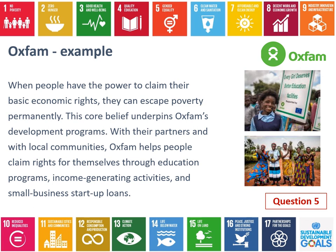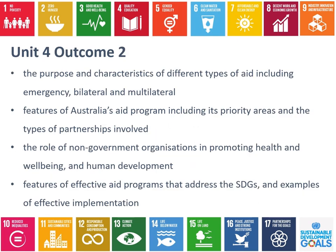Oxfam's work is really about reducing poverty by promoting basic economic rights — that's the main thing underpinning all of their work. Some of the things they do include education programs, income-generating activities, and small business start-up loans. The video will show an example of an income-generating activity where support has been provided to a family to create their own business. Answer question five, looking at the impacts that Oxfam have on health and wellbeing and human development. In our next lesson, we're going to be looking at the features of effective aid programs — what makes aid effective for the people receiving it.